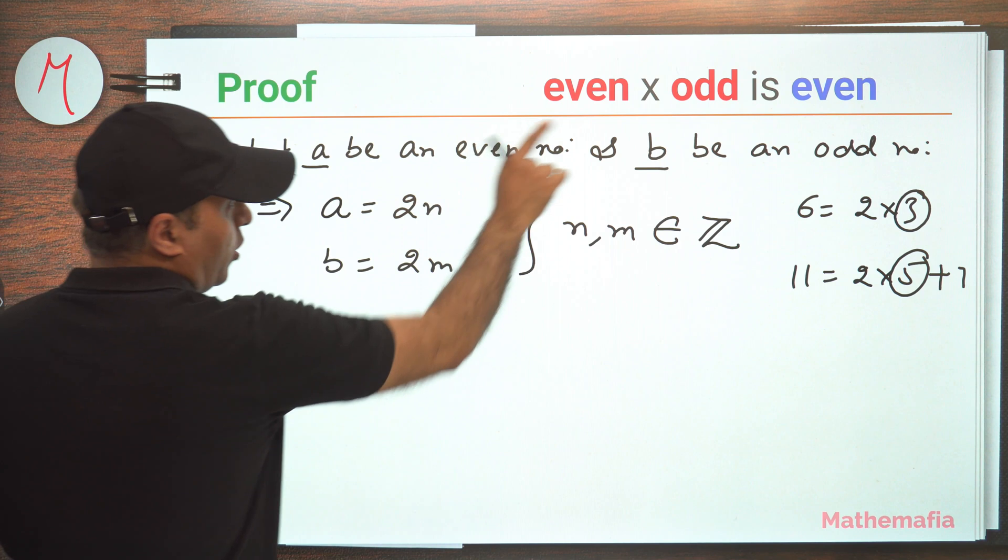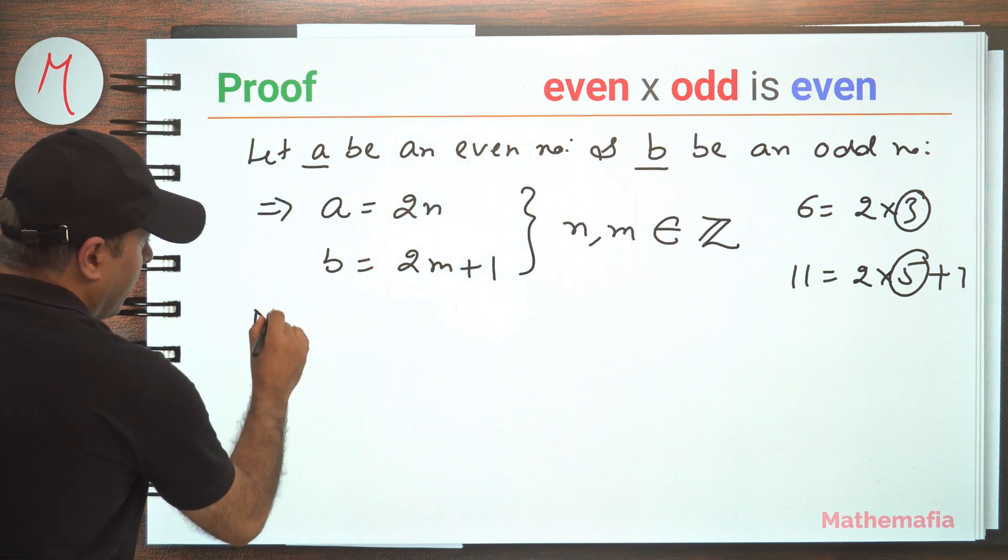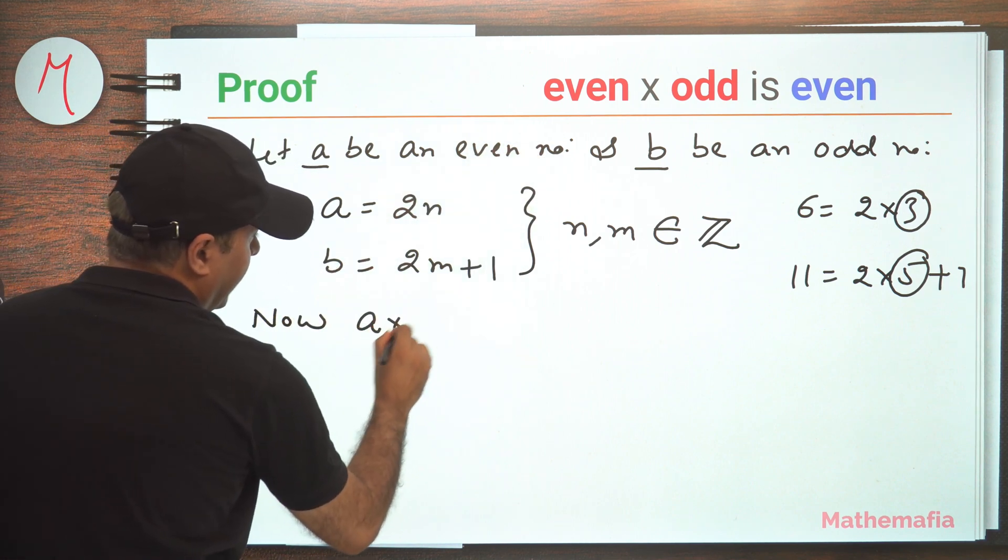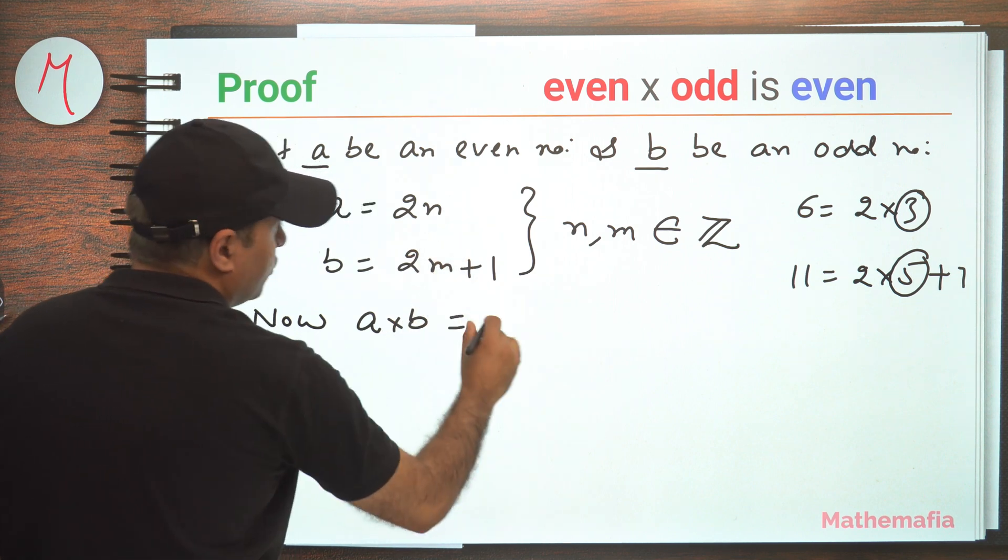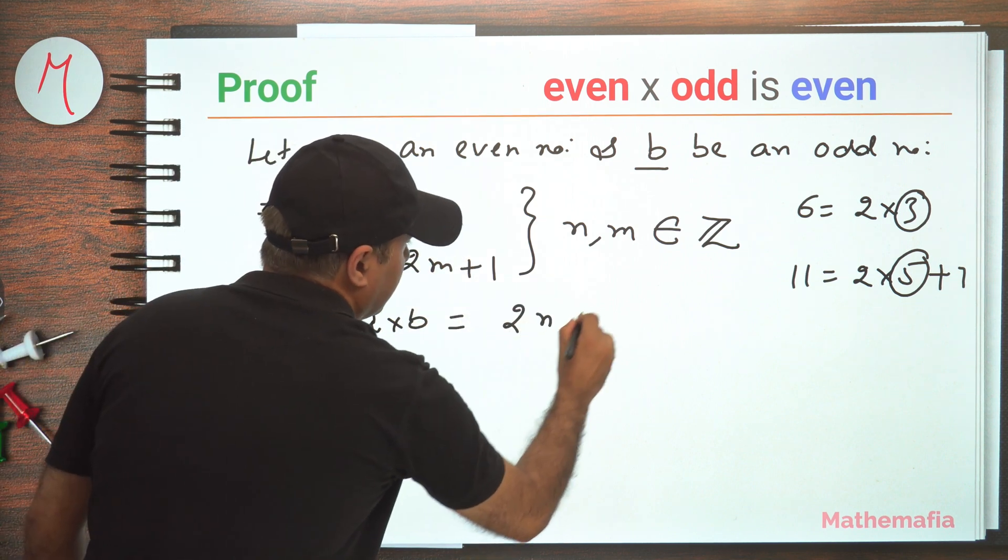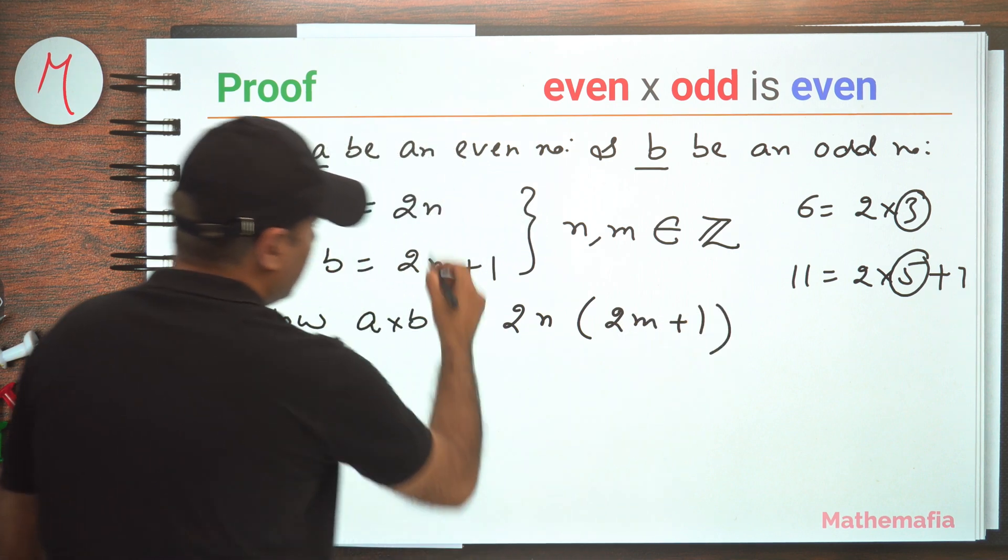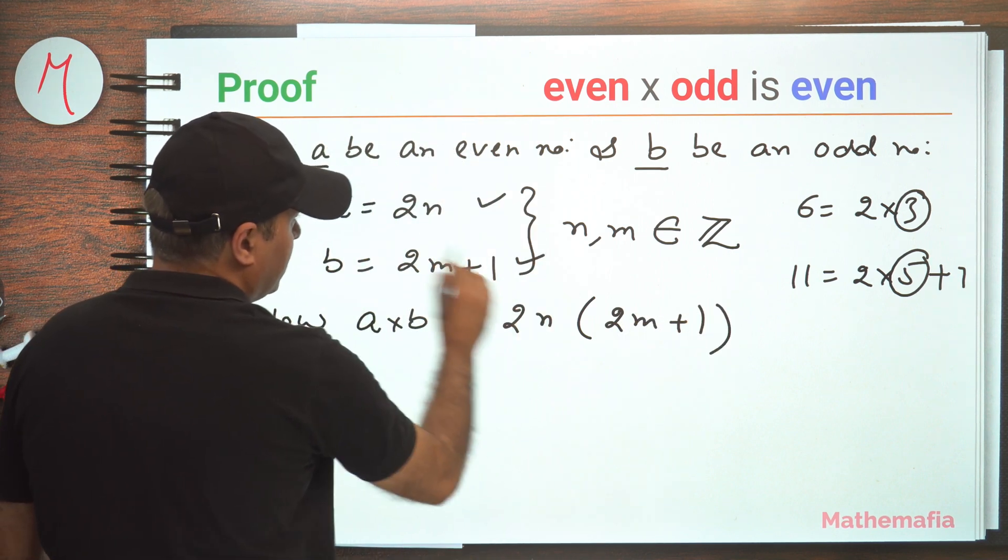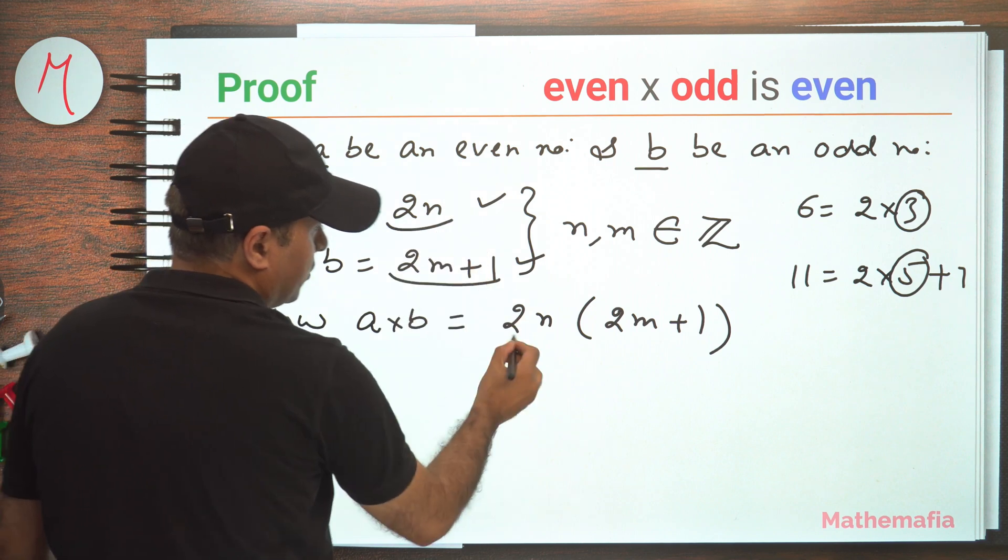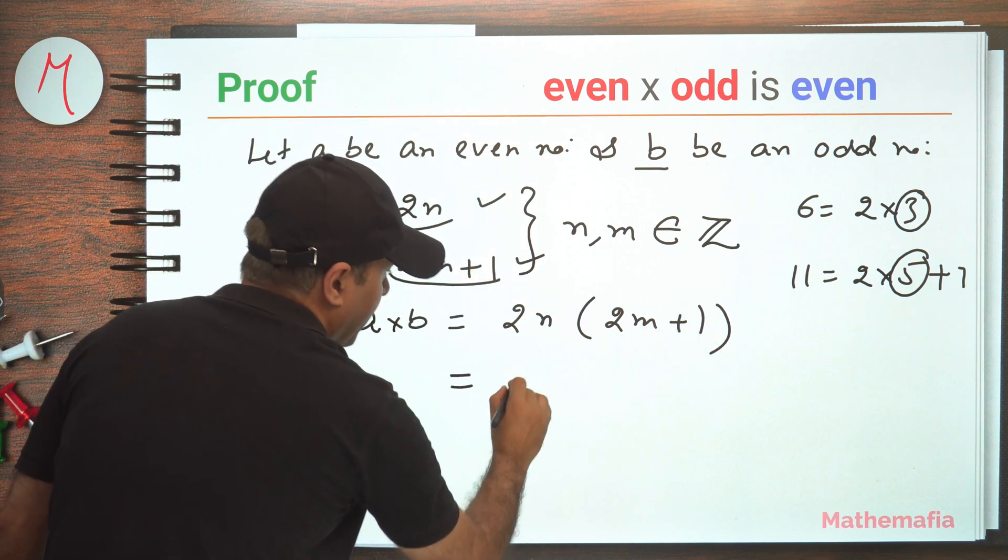Now we have to take the product of these two. So now let's multiply a and b. This will be equal to 2n multiplied by 2m plus 1. So this is a and this is b. So we have to multiply this with this. So this is 2n into 2m plus 1. Let's open it.